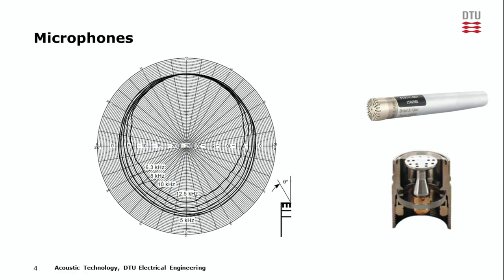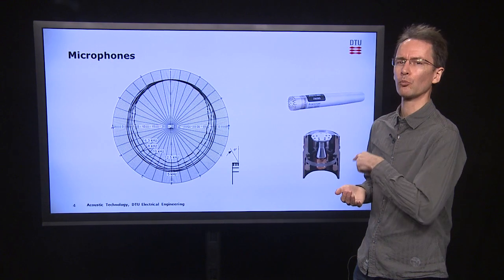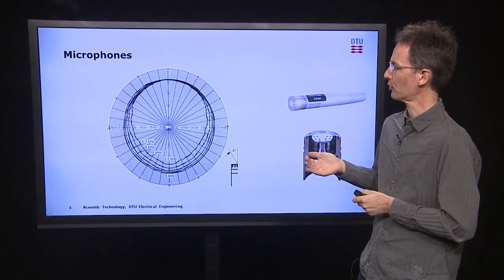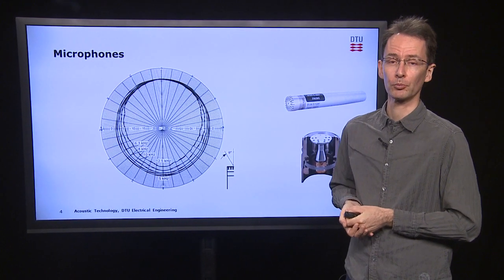Another aspect of a microphone that's important is the directivity. How sensitive is the microphone to sound coming from different directions? This particular microphone is intended for being equally sensitive in all directions. This is shown in the measurement chart here, which shows almost perfect circles except for the very high frequencies. So this microphone is very close to being omnidirectional.